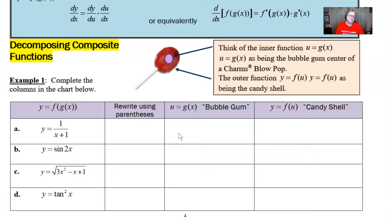At some point, all of you that are watching this have probably enjoyed the wonderful candy of the Charms Blow Pop sucker. So I have an image of one here, probably cherry, and inside of it you can see my sort of exaggerated Photoshop bubblegum center. So I want us to think of the inner function, which is this u = g(x) that's mentioned in the blue box, as being the bubblegum center of the Charms Blow Pop.